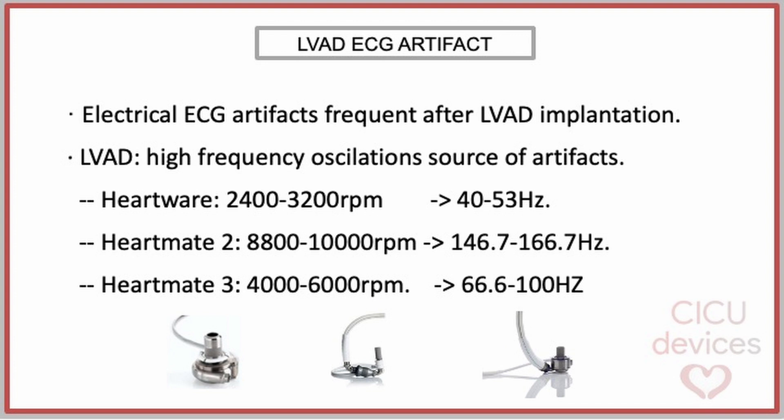HeartMate 2 runs at speeds ranging from 8800 to 10,000 RPM, corresponding to 146.7 to 166.7 Hz. HeartMate 3 operates between 4000 and 6000 RPM, which translates to an oscillation frequency of 66.6 to 100 Hz.